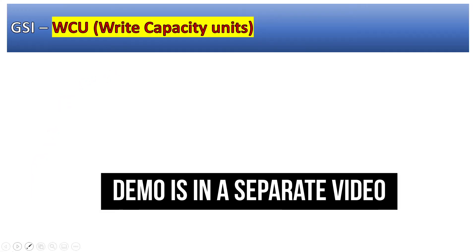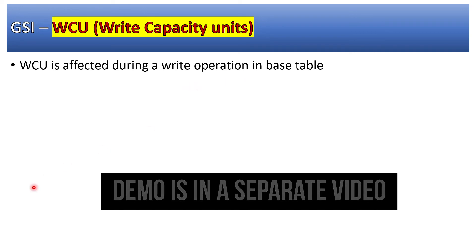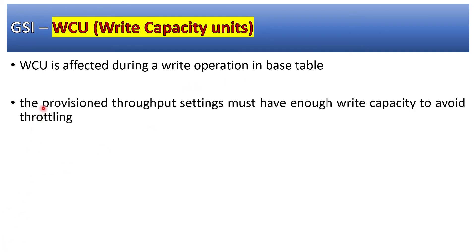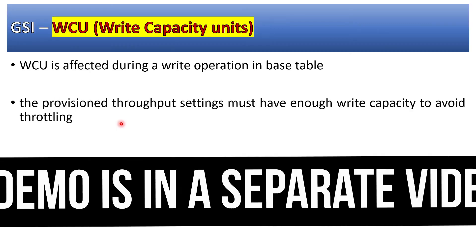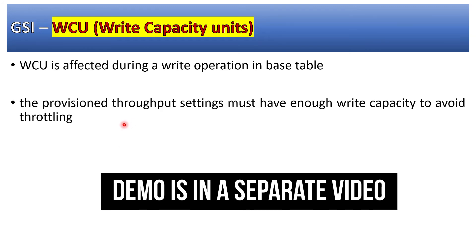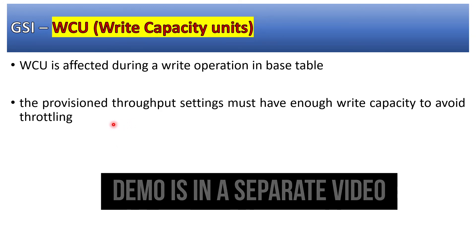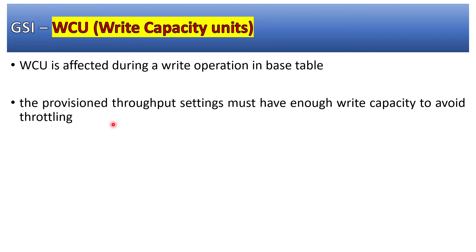Write capacity units are affected during a write operation on the base table, and the provisioned throughput setting must have enough write capacity to avoid throttling. Whatever write capacity units are set for the base table, the GSI maintains its own capacity units and should have sufficient capacity — otherwise a ProvisionedThroughputExceededException will occur.